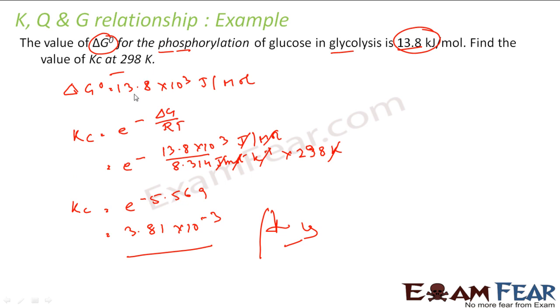One thing to note here is since I am taking G in joules per mole, I will take the R value to be 8.314 joules per mole per kelvin. So the value of R that you should take should match with the value of G.